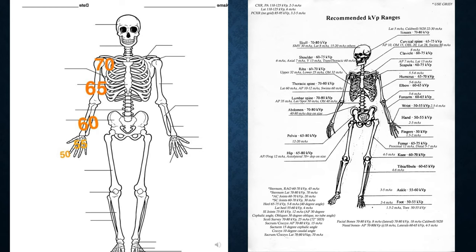This also helps on the registry with the anode heel effect and which part is placed closest to the cathode. It's always going to be the most proximal end — the proximal ends of long bones are generally the thickest. If you're doing a femur, the hip would be placed closest to the cathode. If doing a humerus, it would be the shoulder. For a tib-fib, it would be the knee. Remember that for your registry.